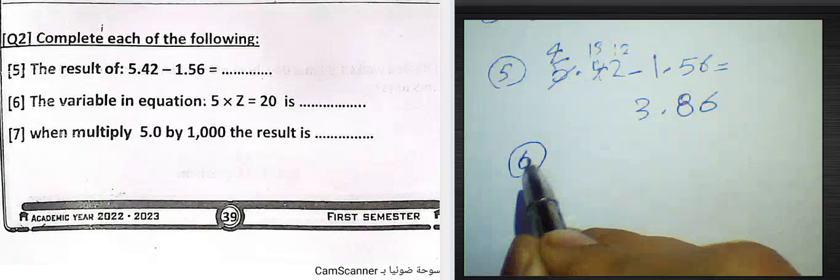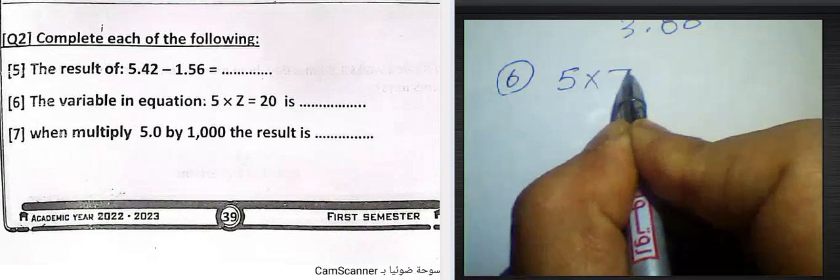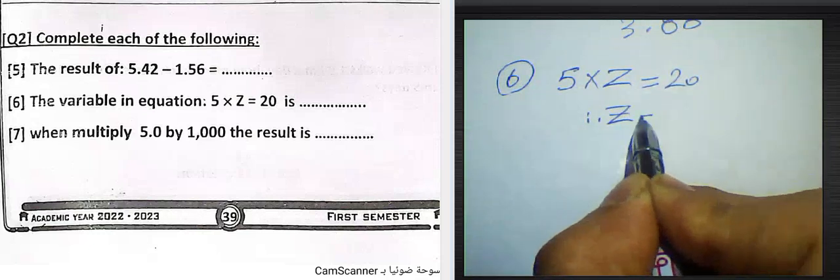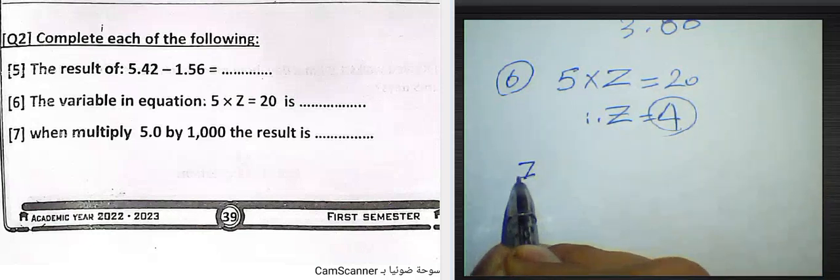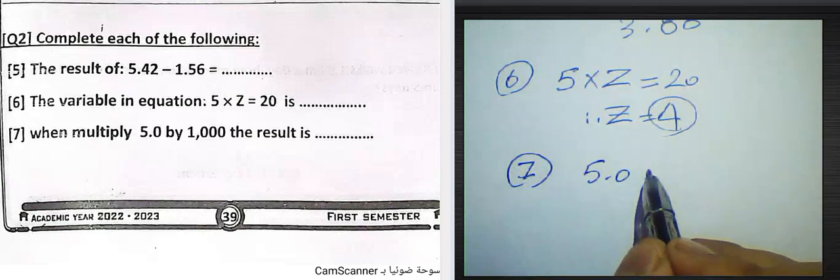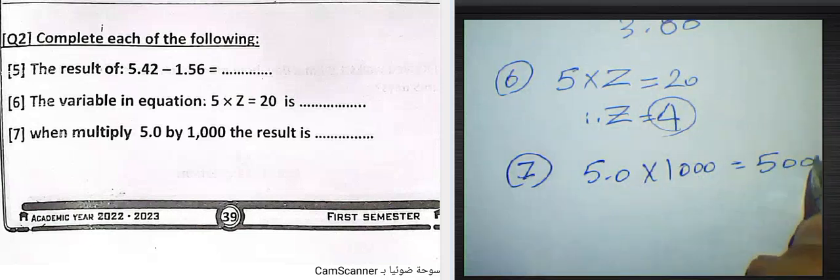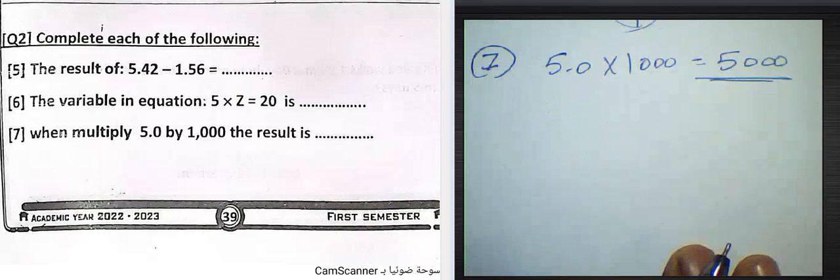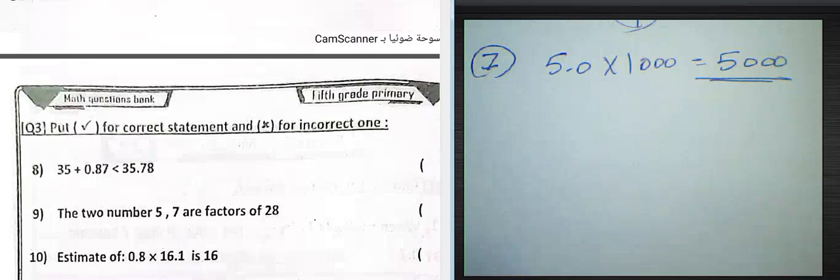Question number six: the variable of equation 5 multiply z equals 20. Z will equal 4, because 4 times 5 equals 20. Question number seven: multiply 5 by 1000, the result is 5000. Question number eight: put true or false.